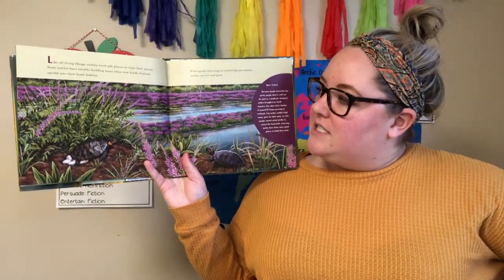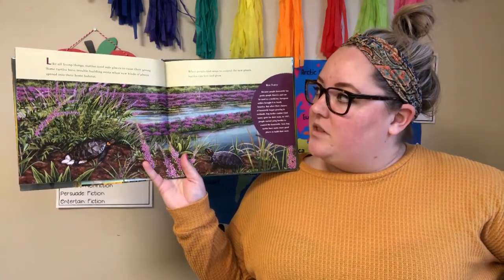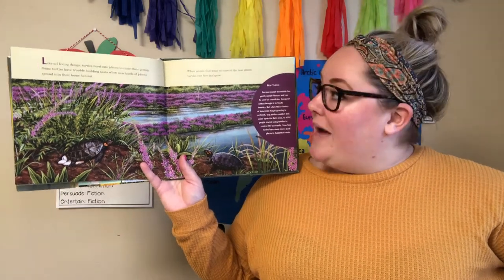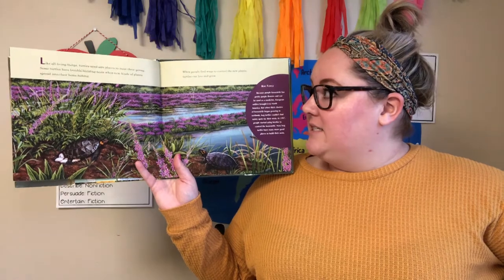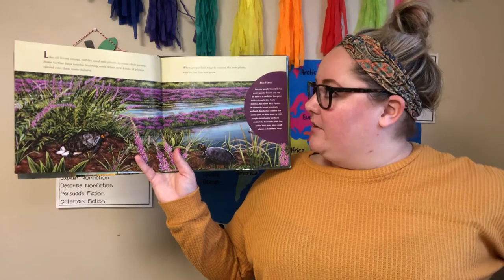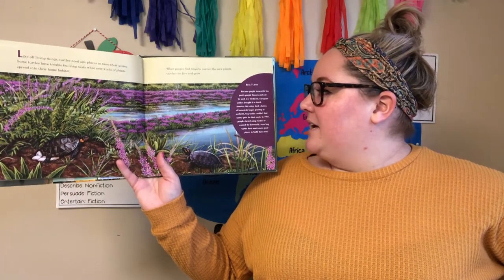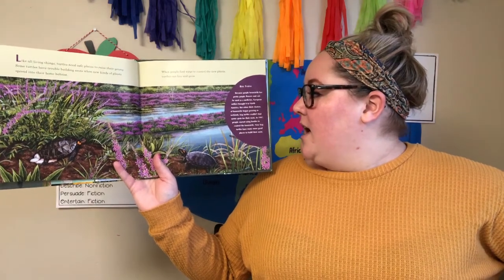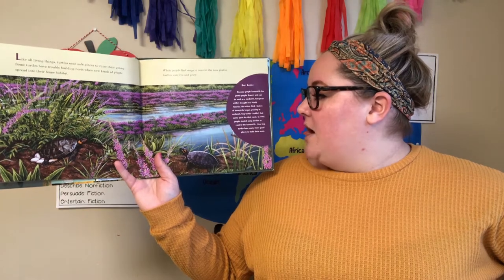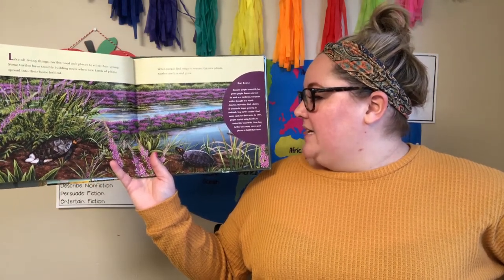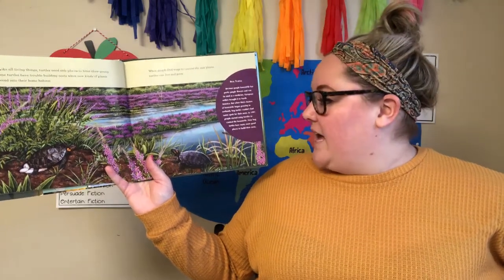Like all living things, turtles need safe spaces to raise their young. Some turtles have trouble building nests when new kinds of plants spread into their habitat. When people find ways to control the new plants, turtles can live and grow. Bog turtle: because purple loosestrife has pretty purple flowers and can be used as medicine, European settlers brought it to North America. But thick clusters of loosestrife in wetlands meant bog turtles couldn't find sunny spots for their nests. In 1997, people started using beetles to control the loosestrife — now bog turtles have many more good places to build nests. That felt like definitely informing.